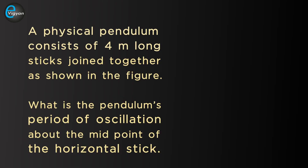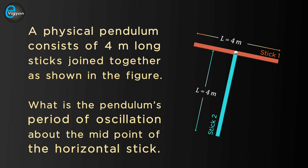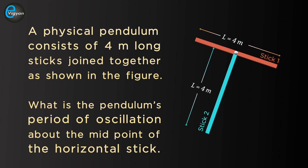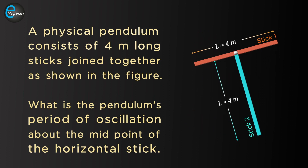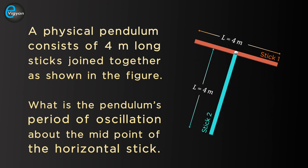The question is: a physical pendulum consists of four meter long sticks joined together as shown in the figure. What is the pendulum's period of oscillation about the midpoint of the horizontal stick?